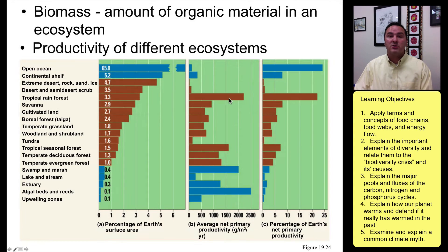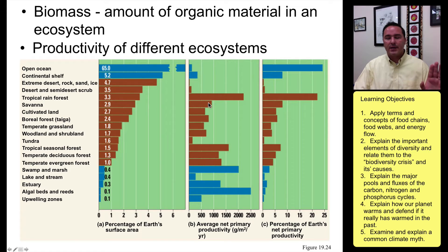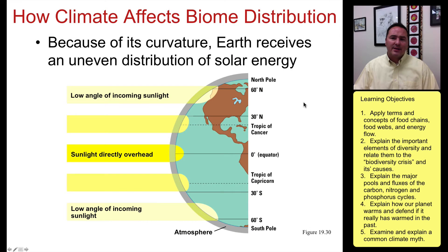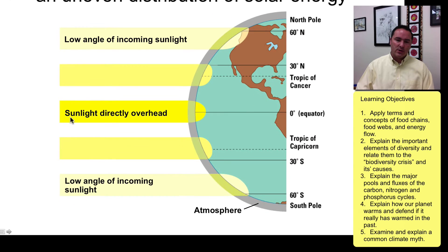If you look at average net primary productivity in grams per meter squared per year, places like algal beds and rainforests are the most productive areas in the world. Combining the percentage of Earth's surface with productivity shows that the open ocean is still very productive overall because it's so huge, but the next most important is the tropical rainforest — which is why it has become the poster child of the environmental movement.